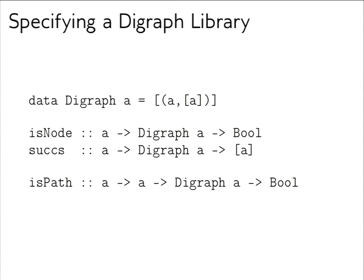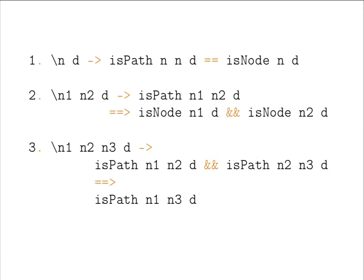Let's try to specify `isPath`. We could start from an empty property set and let FitSpec guide creation of the very first property. But since we don't have time for that, let's start with a simple property set — imagining ourselves as a programmer trying to specify `isPath` — with three properties, and we want to know whether they are good enough for testing.